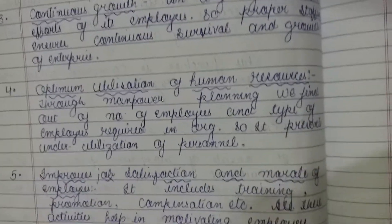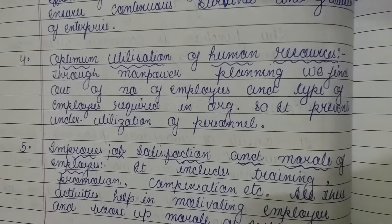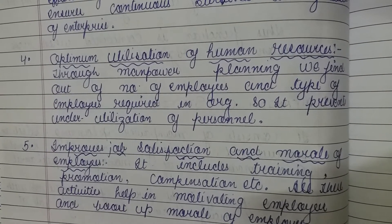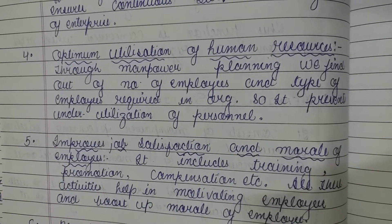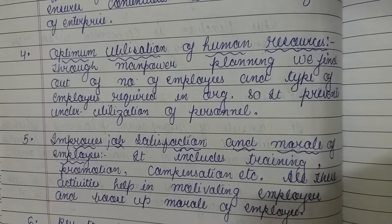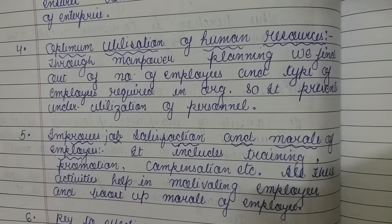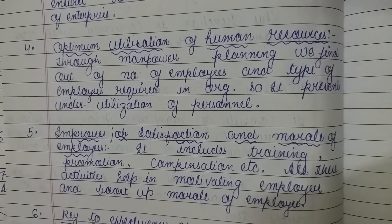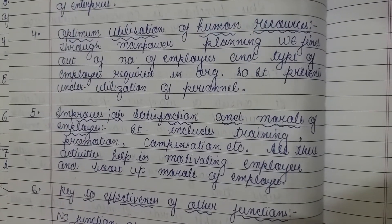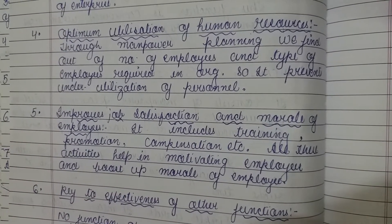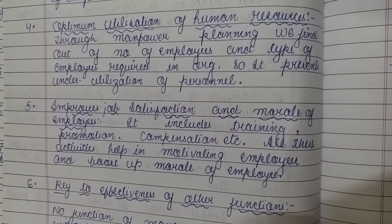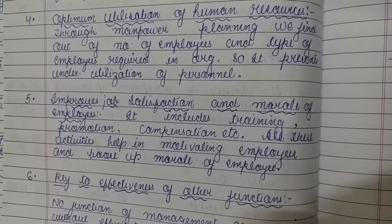Number four: optimum utilization of human resources. Through manpower planning and job analysis, we can find out the number and type of employees required in the organization. So, there are no chances of overmanning, shortage, or under-utilization of personnel. हम manpower planning और job analysis करते हैं — कि हमें कितने employees की जरूरत होगी और उनका क्या type रहेगा. जिससे हमारी shortage और under-utilization की condition organization से remove हो जाती है, और हम अपने human resources का optimum utilization कर सकते हैं.